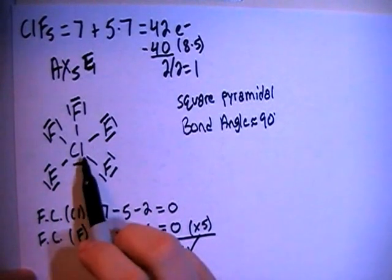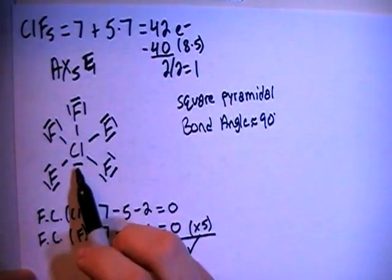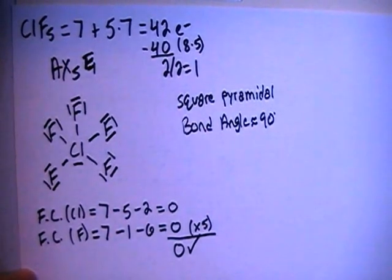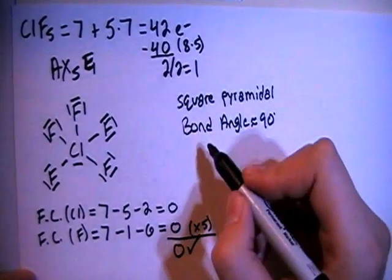All right, in terms of hybridization, looking at the central chlorine here, there's 1, 2, 3, 4, 5, 6 electron groups or 6 potential bonding sites.